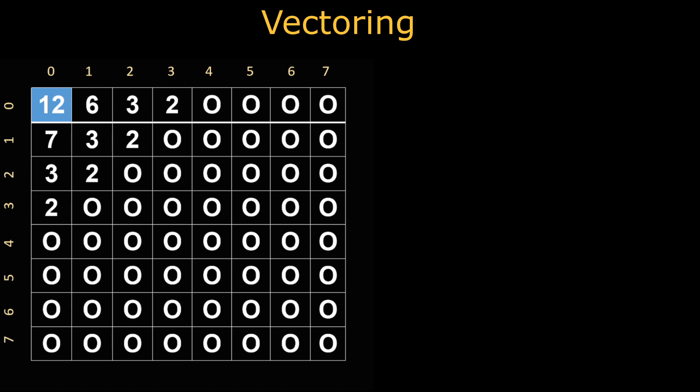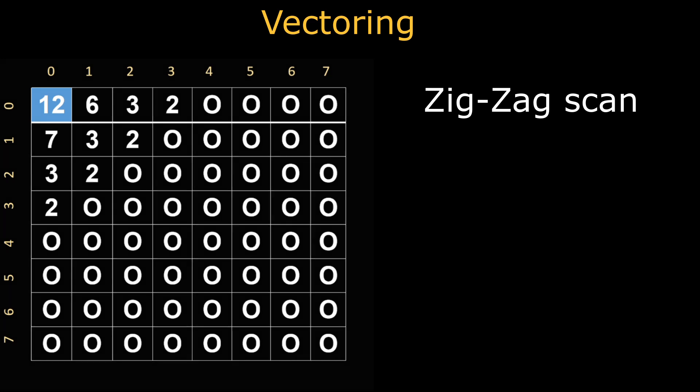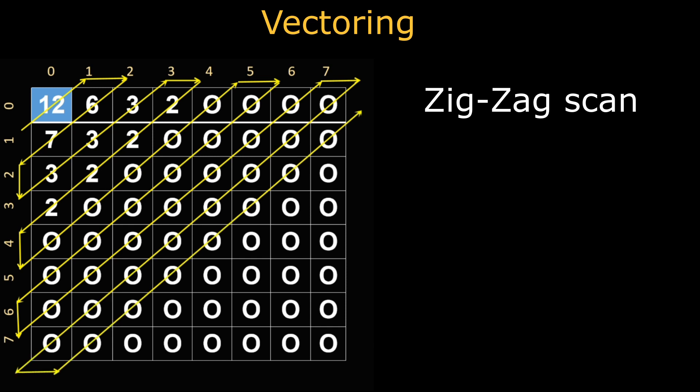In order to convert this matrix into a vector, JPEG uses the zigzag scan. The scanning order is illustrated by a yellow line which traces the entire matrix. It will first trace 12, then 6, 7, 3, 3, 3, 2, 2, 2, 2, and the remaining elements will be 0.